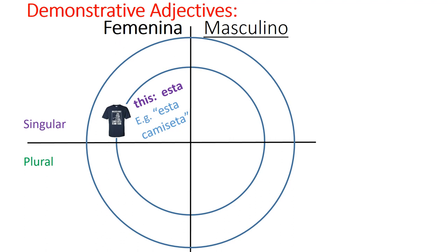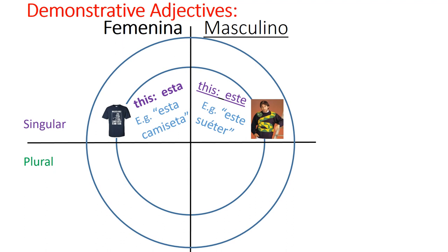Now, a disclaimer — this isn't my fault, Spanish messed this one up. If we follow the established pattern, the masculine form should be esto, as in esto zapato. But that's not it. You actually say este, so it's este zapato. Why is it an E instead of an O? Don't ask me, ask Spanish. Este is the masculine singular form of 'this.' For example, este suéter — this sweater, this one right here.